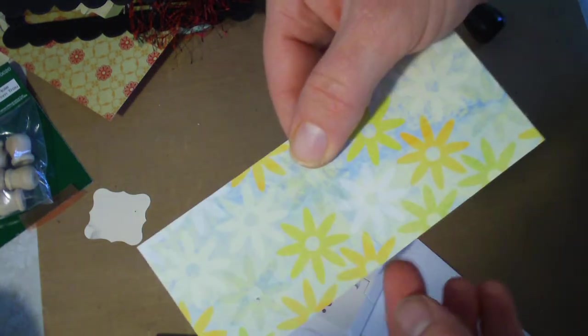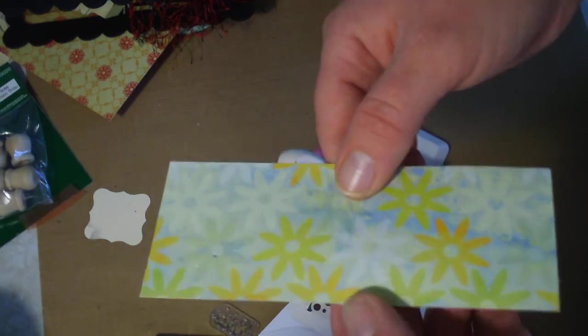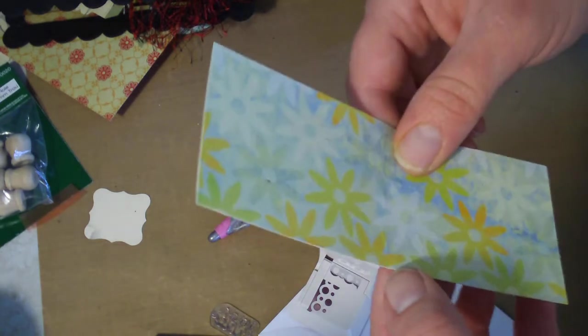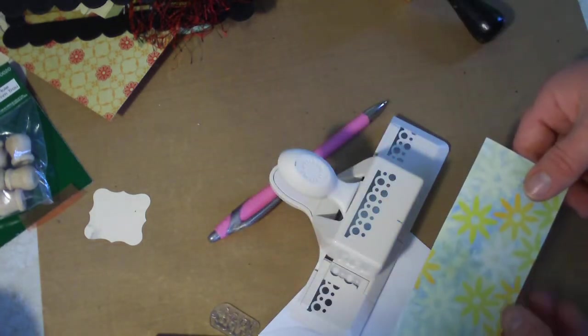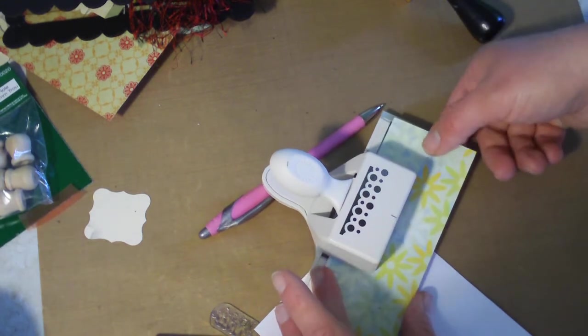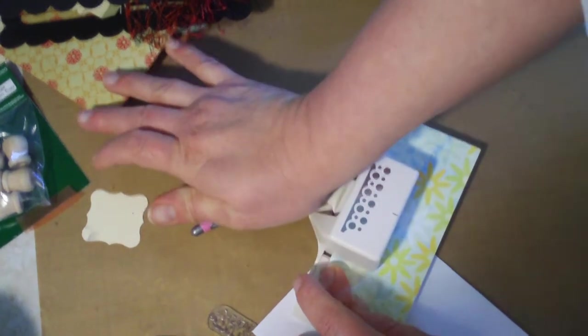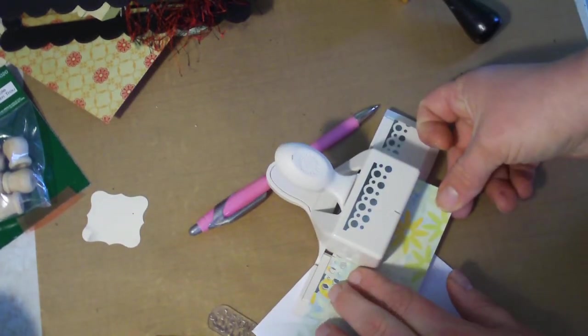I don't want to fold it completely in half because I don't want to see that mark when I'm done. So what I do is I line it up with that line and I start punching. I do my first punch and then I pull it to the side.